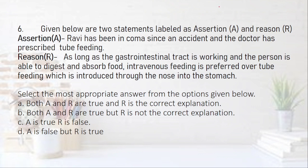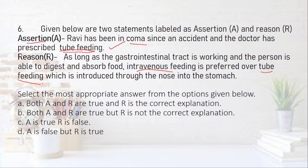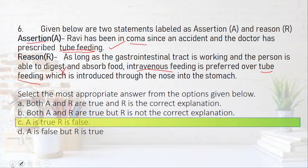Question six assertion: Ravi has been in a coma since an accident and the doctor has prescribed tube feeding. In a coma the person cannot swallow, so an artificial mode of feeding must be incorporated — this is correct. Reason: as long as the gastrointestinal tract is working and the person can digest and absorb food, intravenous feeding is preferred over tube feeding. Intravenous feeding is not preferred over tube feeding for long periods because you can provide complete nutrition through tube feeding, which is not possible intravenously. So R is incorrect, and the answer is option C — A true, R false.